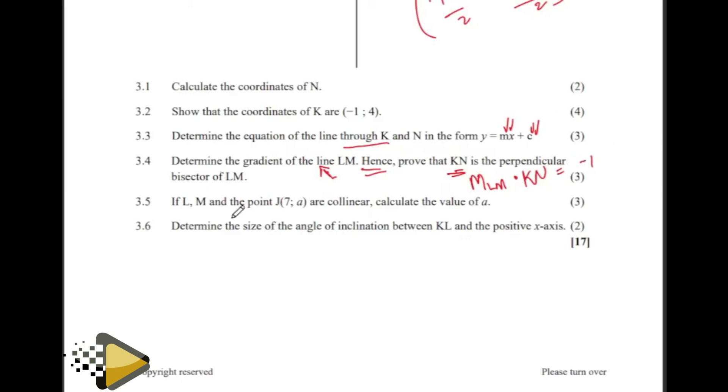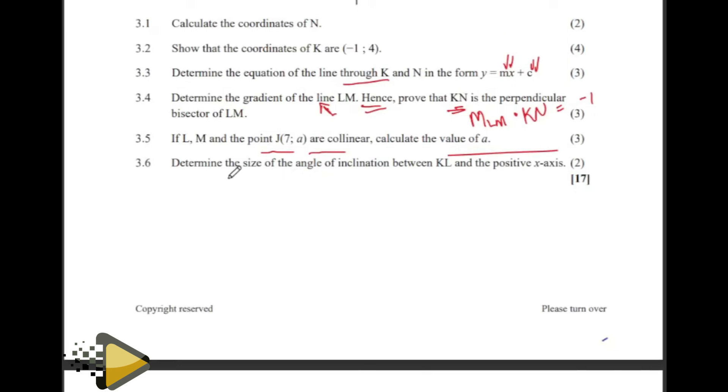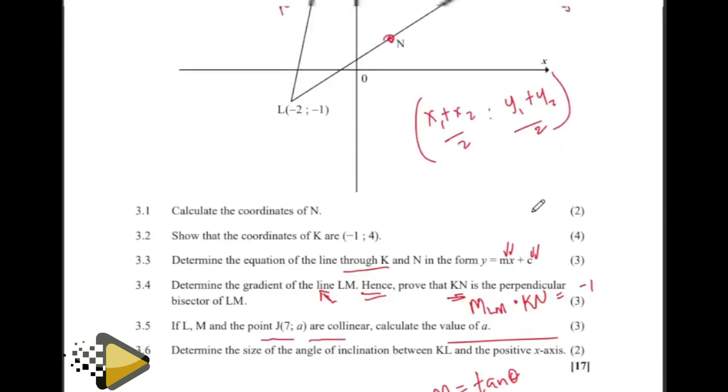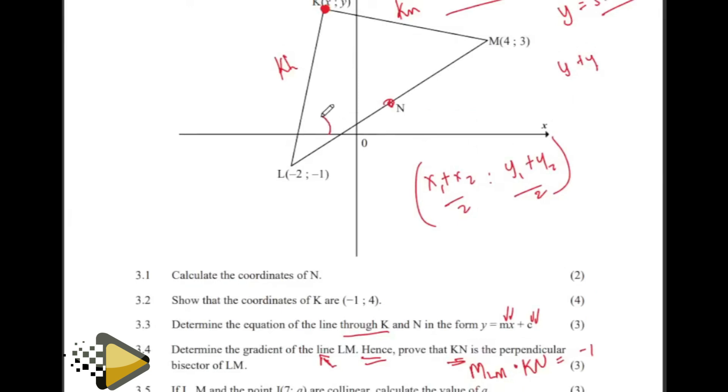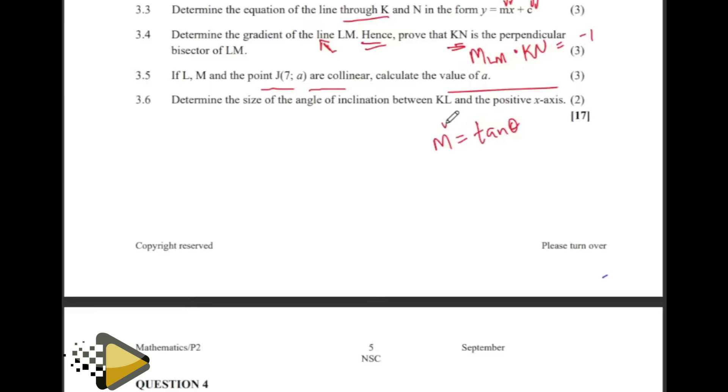3.5, they are telling us we have this point J that is on the same line as LM, and they're telling us those points are collinear. Calculate A. Use the gradient. Then the size of the angle of inclination. When we have angles of inclination, we have M is equal to the tan of theta. Theta is our angle of inclination between the x-axis and that line. We normally prefer using the positive x-axis. So this angle is what they want. For you to get that angle, you need to know the gradient. We can say theta will be the arctan of the gradient of that line.